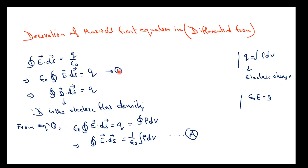From equation 1 we write ε₀∫E·ds = Q, and since Q = ∫ρ dV, moving ε₀ to the other side gives ∫E·ds = (1/ε₀)∫ρ dV. Let's call this equation (a).